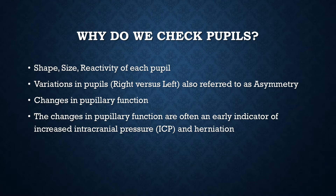Starting at the beginning — why do we check pupils? We're really looking at information regarding the shape, size, and reactivity of each pupil, not only in relationship to one another, whether they're equal or asymmetrical, but also changes in pupillary function over assessment. Changes in pupillary function are often excellent early indicators of increased ICP and herniation, and they are detectable much earlier than a change in mentation. Before your patient begins to become drowsy, we can note changes in pupillary function, which is very valuable as a neuro nurse.